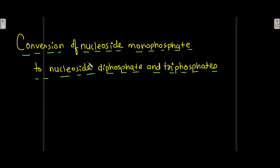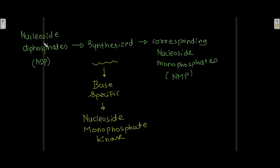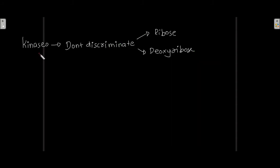Conversion of nucleoside monophosphate to nucleoside diphosphate and nucleoside triphosphate. Nucleoside diphosphates, that is NDP, are synthesized from the corresponding nucleoside monophosphates by base-specific nucleoside monophosphate kinase. This nucleoside monophosphate kinase converts NMP into NDP. These kinases involved in this type of reaction don't discriminate between ribose and deoxyribose.